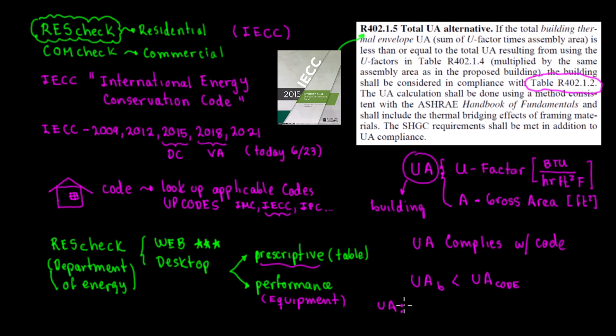UA is the U-factor multiplied by gross area, which represents the thermal transmittance of the assembly.